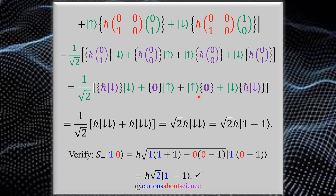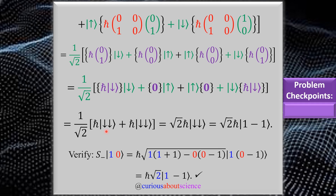The zeros drop out, and since we operated on the appropriate states, we recombine into one ket. After the blue lowering operator acts on the up state, we get two down states in their conjoined form. Both results carry an ℏ factor, and since we have two of them — 2/√2 — rationalizing gives us the factor of √2. So we confirm the result with the √2 ℏ prefactor.